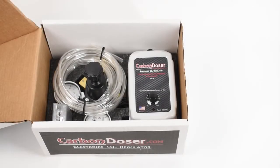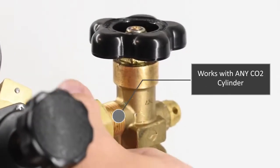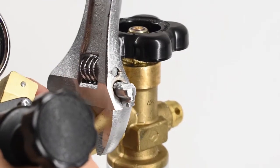Inside the box, you'll find everything you need to set up your carbon doser regulator. If you purchased a complete kit, attach the regulator to your CO2 cylinder and tighten it with a wrench.